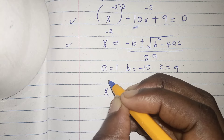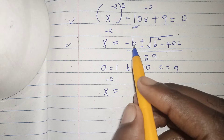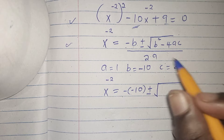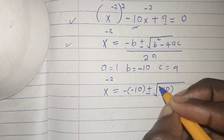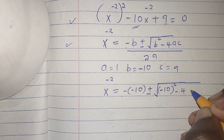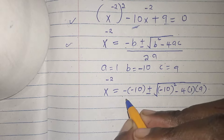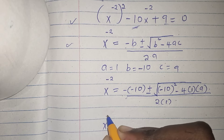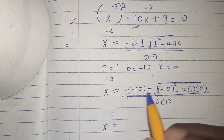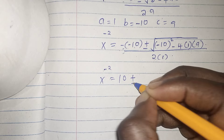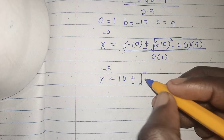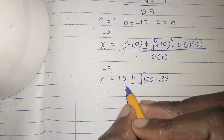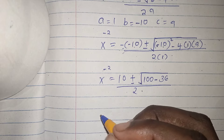x to the power of negative 2 is equals to negative b, which is negative negative 10, plus or minus the square root of b squared — so negative 10 squared — minus 4 times a, which is 1, times c, which is 9, over 2a which is 1. Negative times negative gives positive, so this becomes positive 10 plus or minus the square root of 100 minus 36, over 2.